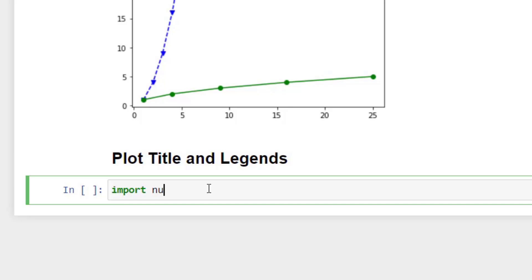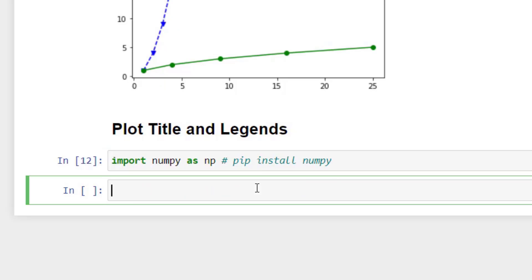So I will be importing NumPy. Import NumPy as NP and by the way, you should have this NumPy installed in your system. You can install NumPy with pip using this command pip install NumPy. So I will just simply run shift enter, it will run. So NumPy is now imported as NP alias.